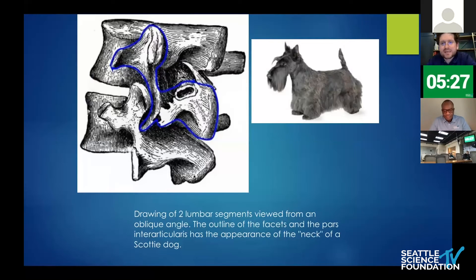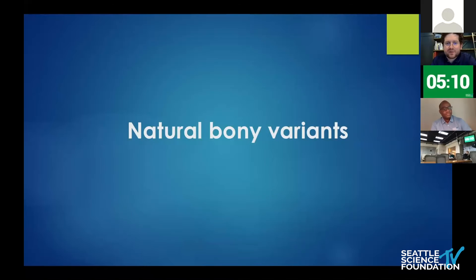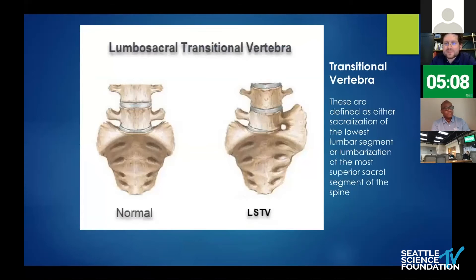You may have heard the reference of the Scotty dog sign. When looking at a sagittal oblique X-ray, the outline of the facets and the pars interarticularis has the appearance of a Scotty dog's neck, and you can sometimes visualize a pars defect on X-ray using this landmark.